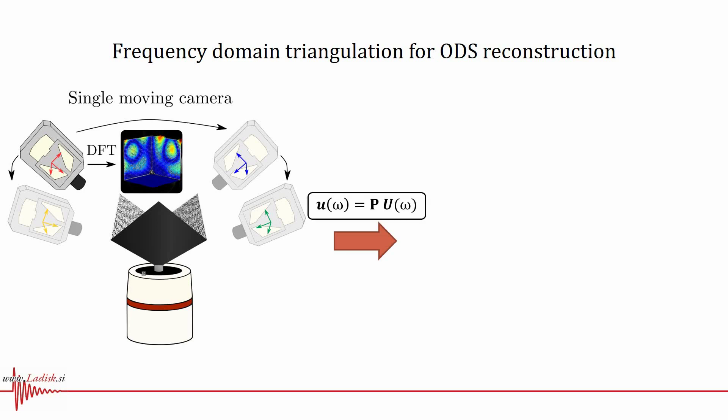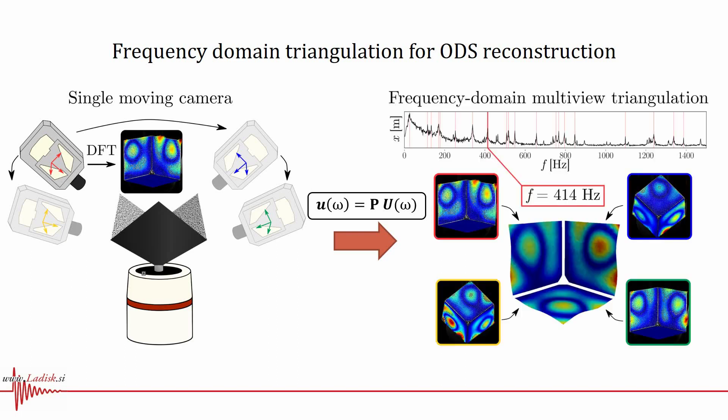You may recognize this camera transformation equation from the previous slide. We were able in our research to show that for small harmonic displacements, we can apply the perspective camera model also in the frequency domain. Utilizing the properties of linearity and time invariance of a vibrating response under stationary excitation, the images acquired at different points in time are used to reconstruct the spatial operating deflection shapes of the object at any given frequency in a single frequency domain multi-view triangulation step.